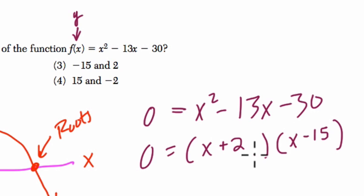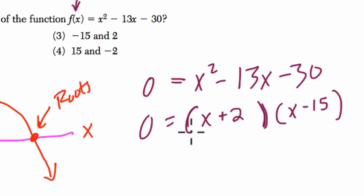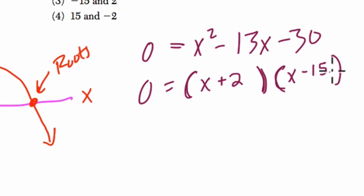So now we have x plus 2, some number, times x minus 15, and that product is zero. The only way to get a product of zero is if your first number, x plus 2, equals zero, or x minus 15 is zero.